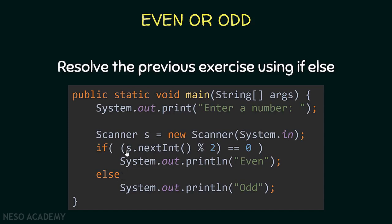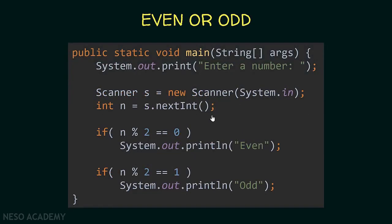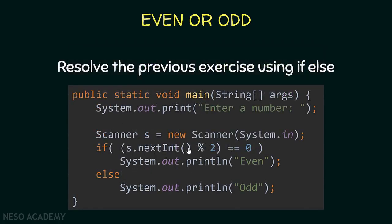If this condition is true it means the number is even, so I print 'even'. If the condition is not true, the else executes and the number is odd, so I print 'odd'. You might ask why I used s.nextInt directly without storing it in a variable — simply because I only use it in one place, inside the if statement. In our previous solution we used the value in two places, which is why we stored s.nextInt in a variable.